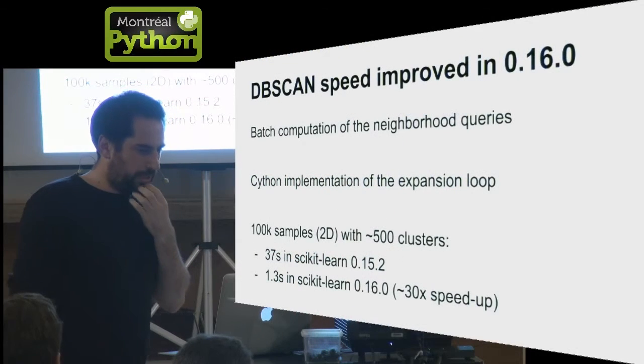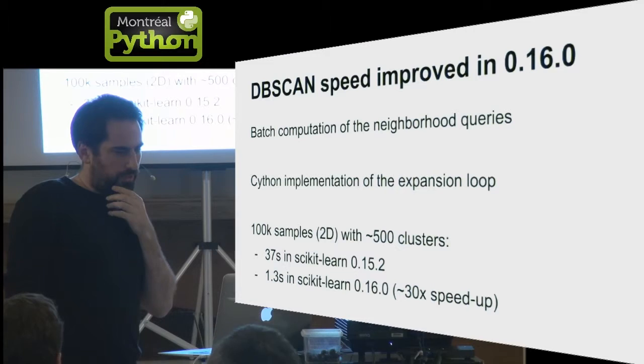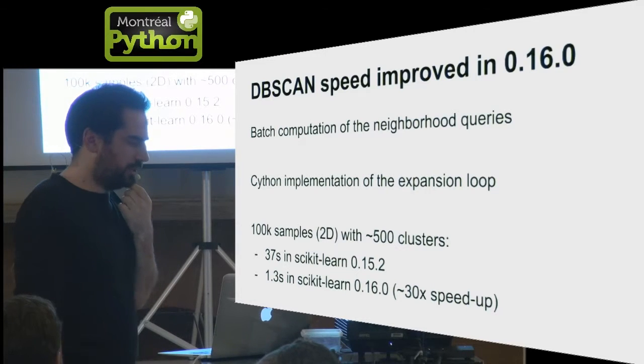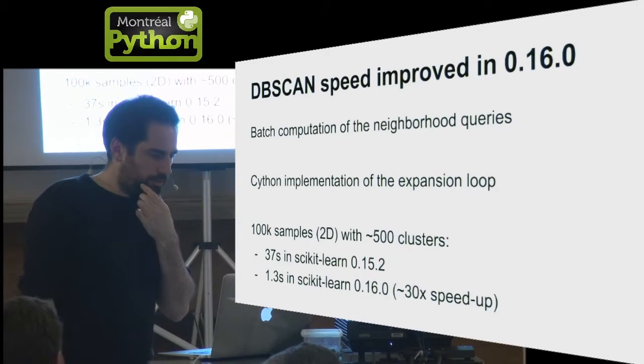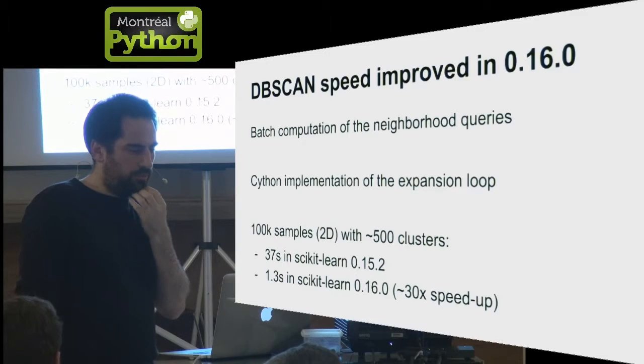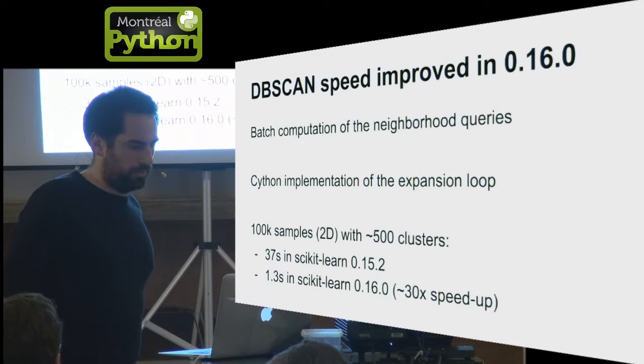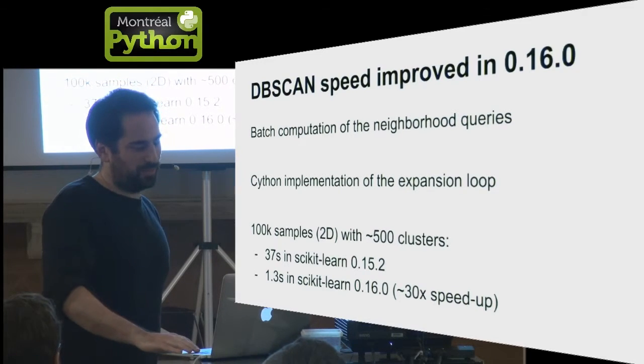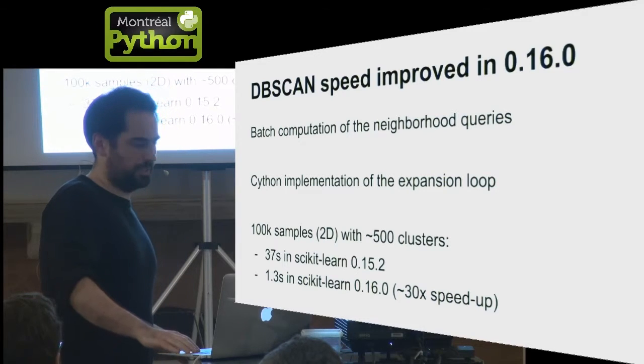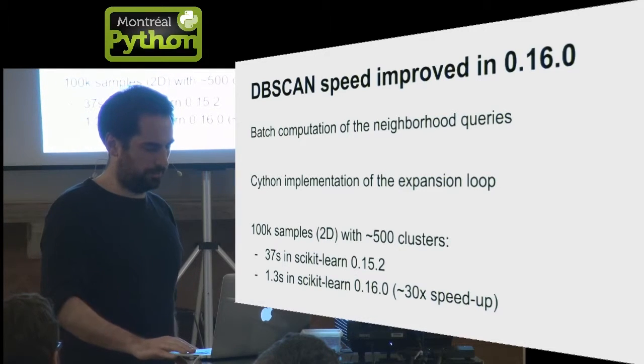In 0.16, we improved the algorithm, the implementation of that algorithm. You can label hundreds of thousands of samples without any problem in almost in the order of a second. It's a 30-time speedup compared to the previous implementation, which was really naive in several respects.